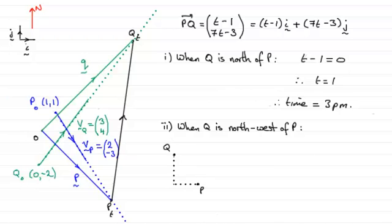When Q is northwest of P, we mark north here. This angle would be 45 degrees, which means this is 45 degrees, and this is also 45 degrees. We've got an isosceles right-angled triangle, so these two lengths must be exactly the same.